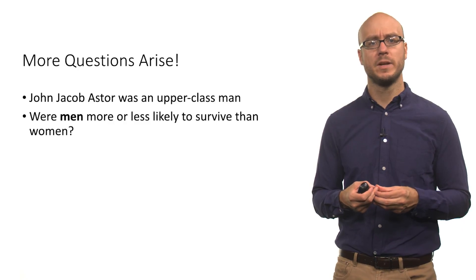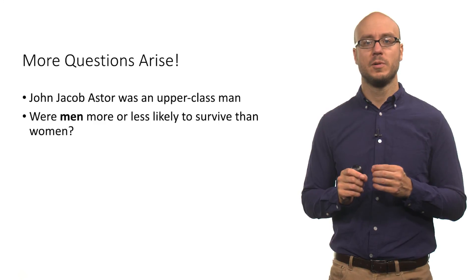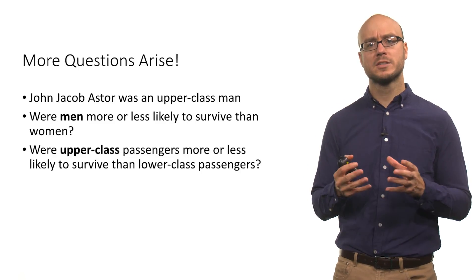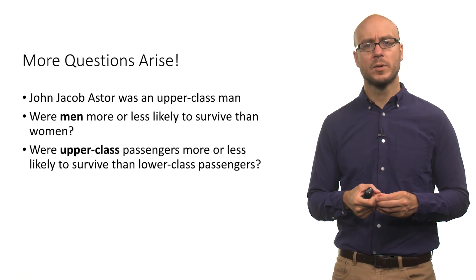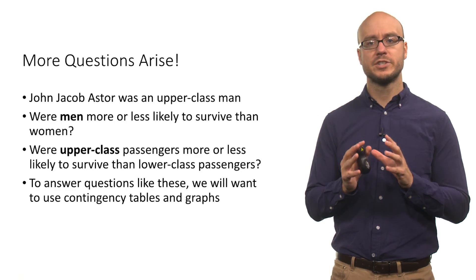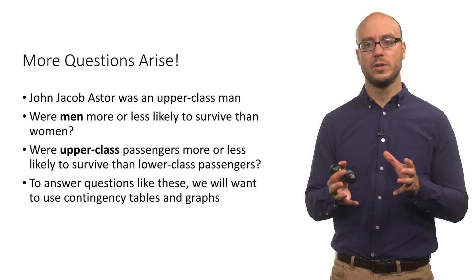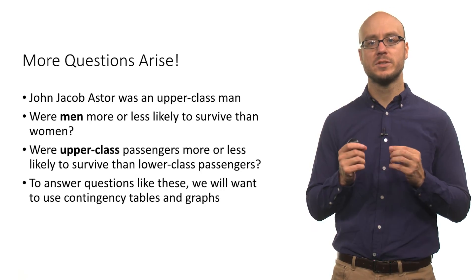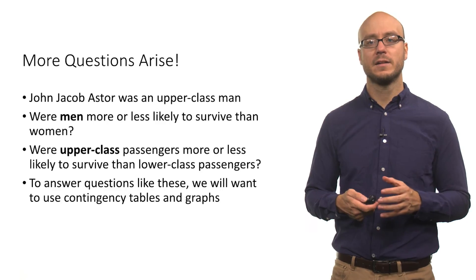This raises some questions. He was an upper class man, so you might wonder: were men more or less likely to survive than women? If you just look at John Jacob Astor and his wife, that really can be viewed as anecdotal data. You might also ask whether upper class passengers were more or less likely to survive than lower class passengers. These little bits of observations can guide us and provide an impetus for answering certain questions, but in general you want to use the full range of the data. One way to look at the data and answer these kinds of questions is to use tables and graphs — in particular, contingency tables.